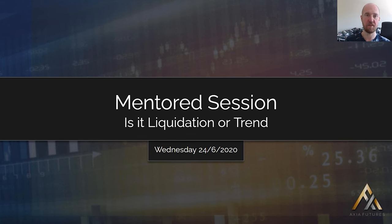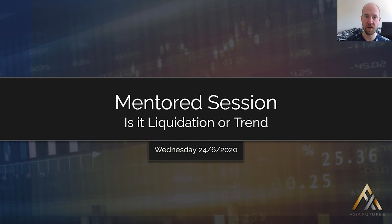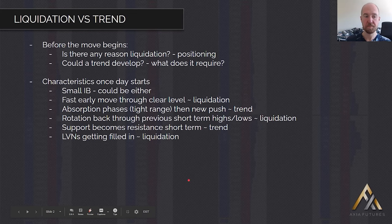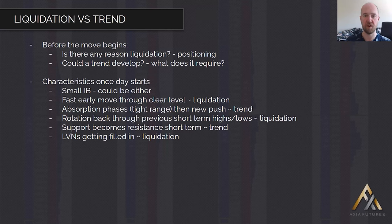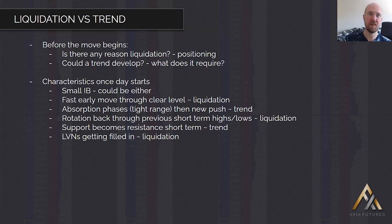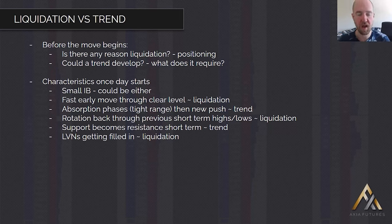Let's look at some key characteristics to consider beforehand. A trend day is a very tricky thing to call beforehand. For a trend type day to happen, you need larger timeframe participants - people who are going to continue to buy and buy and buy, or sell and sell and sell all day long, keeping that move going. That's very hard to predict. You can't tell whether some hedge fund, bank, or mutual fund is going to decide that today's the day they start buying or selling.